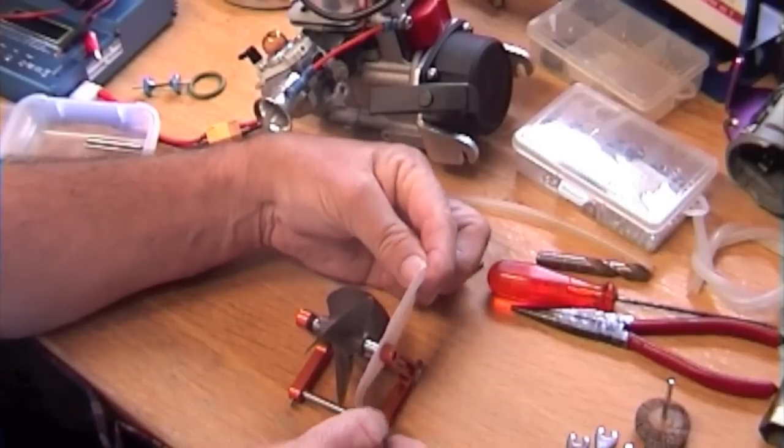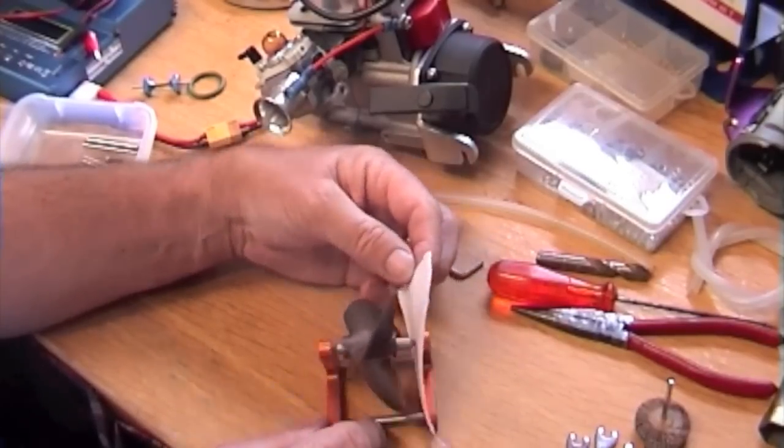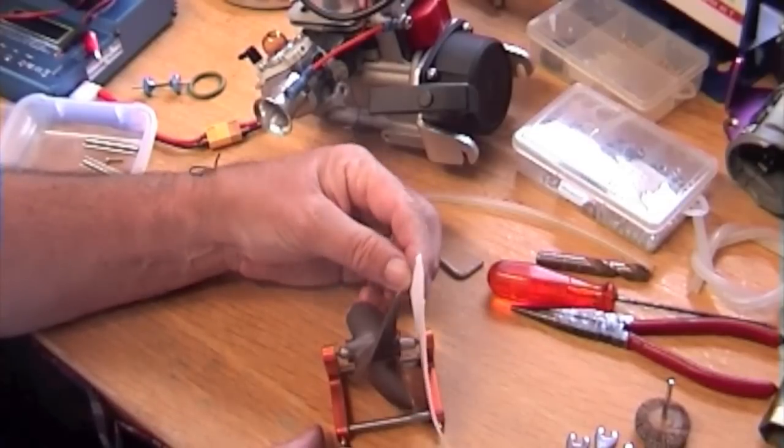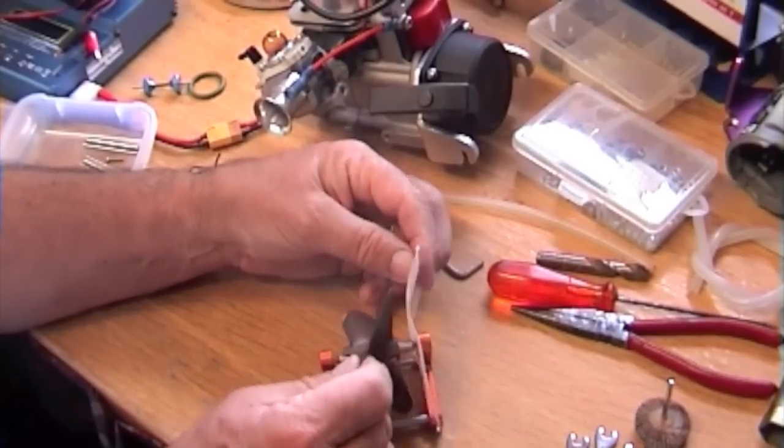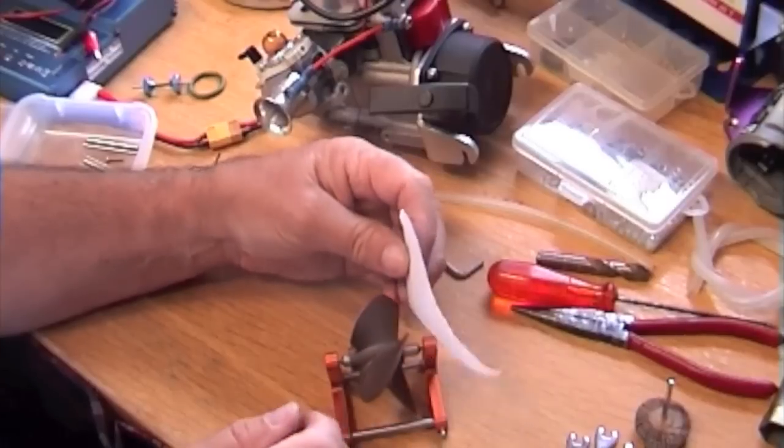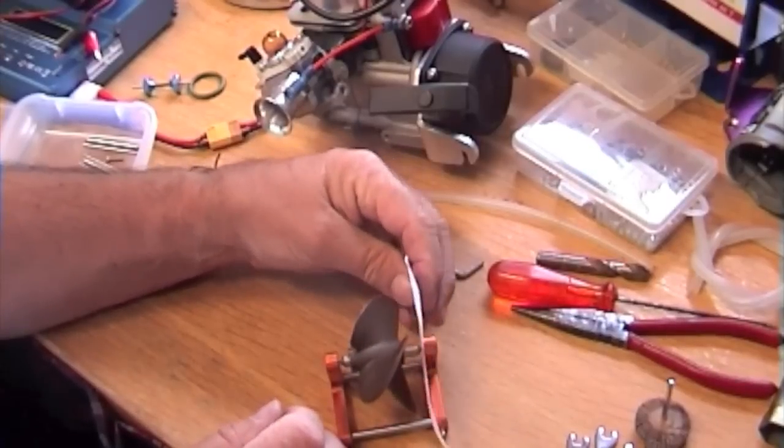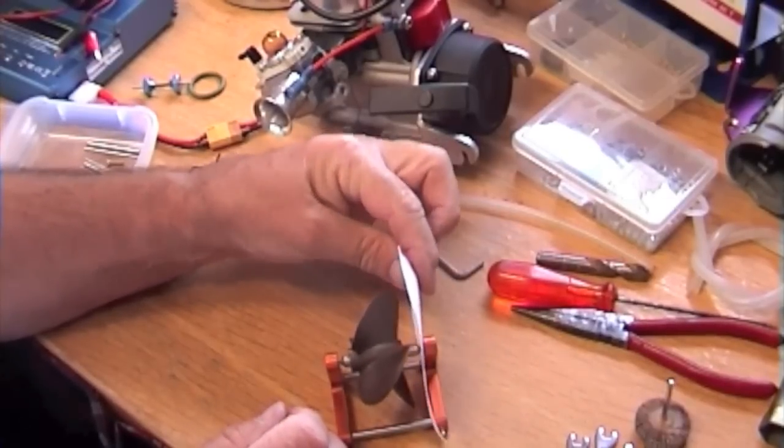So you see one end is touching the other end isn't. I don't know if you can see that very well but the paper is actually going between the spindle and the propeller. Okay so that's how close it's got to be. Just a paper width through.